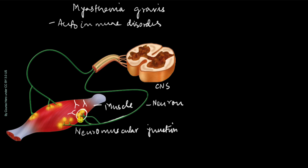When the antibodies affect this neuromuscular junction, this communication is not happening very effectively. The neuron is sending the signal but the muscle is somehow not receiving it well. So what happens is the muscle does not contract as efficiently, it gets weakened, and that may result in tiredness, fatigue, or even in some cases paralysis.